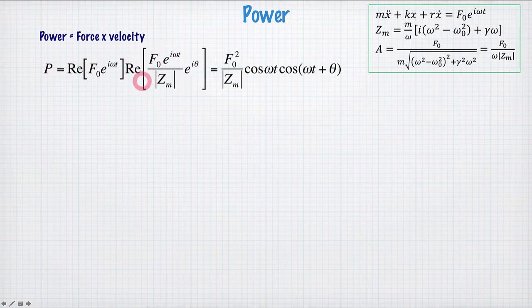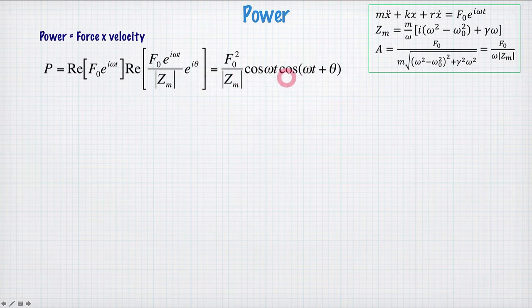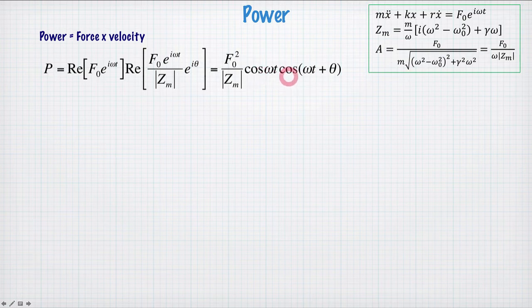The velocity is something we've found in previous videos, so the velocity is given by this in terms of the mechanical impedance, and we take the real part of that, multiply it together, and we get an expression for the instantaneous power as a function of cos(ωt) and cos(ωt + θ). So this is the instantaneous power at any given time t.